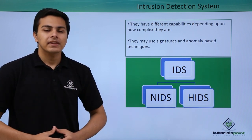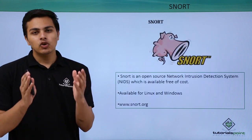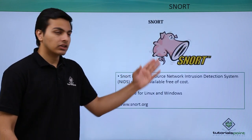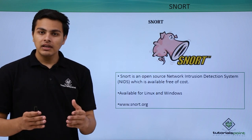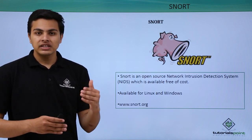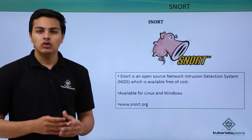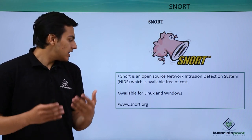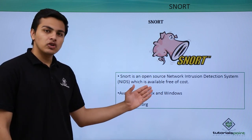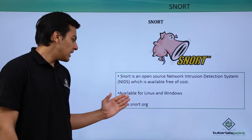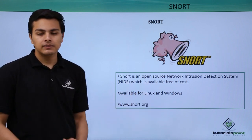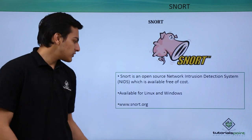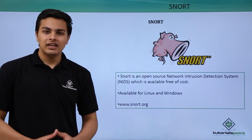There is one open-source NIDS called Snort, which we will use in this video to see how we can deploy a network intrusion detection system on our network and detect intruder activities. Snort is an open-source network intrusion detection system available for both Linux and Windows, and you can download it from their official website at snort.org.